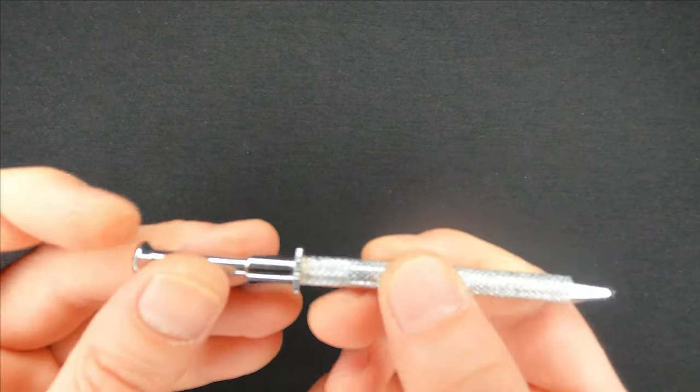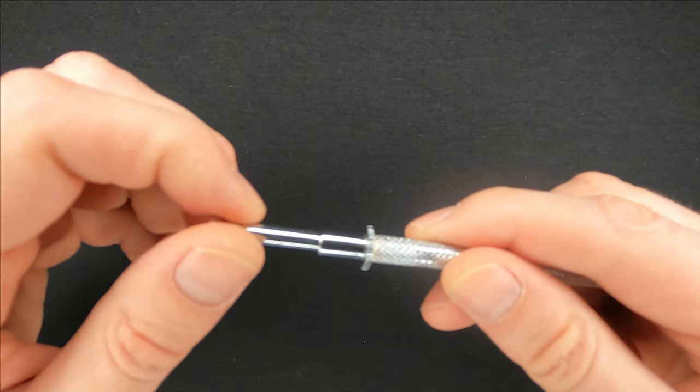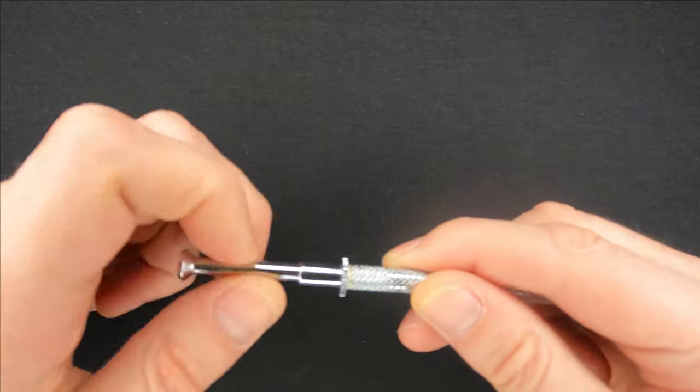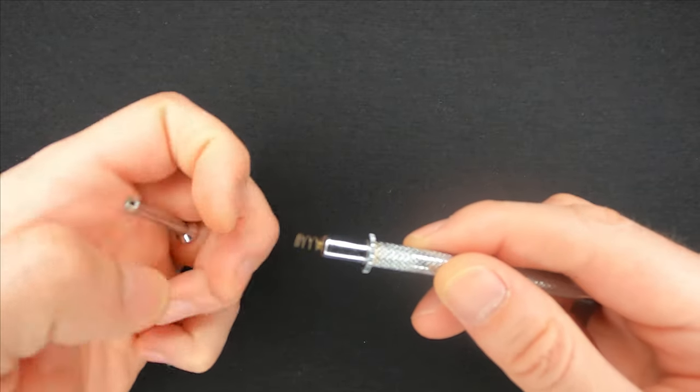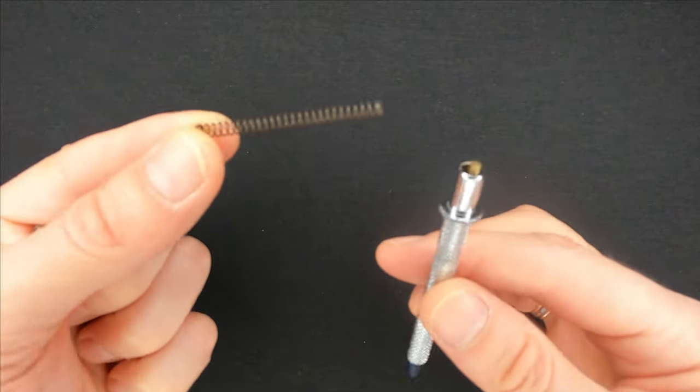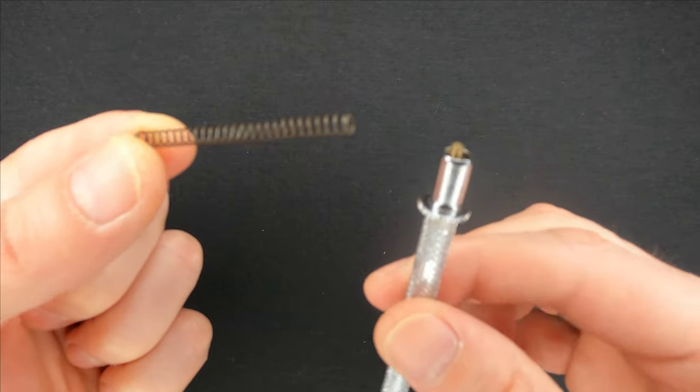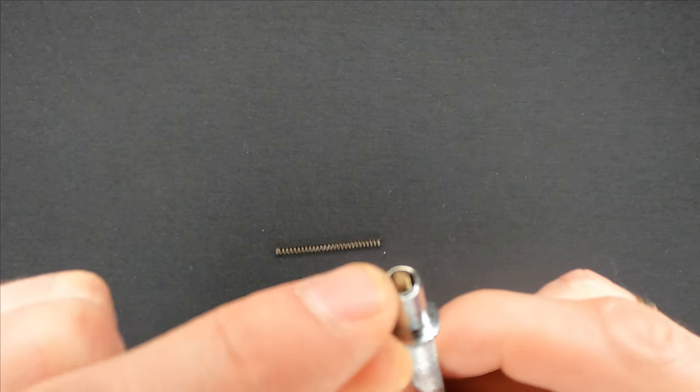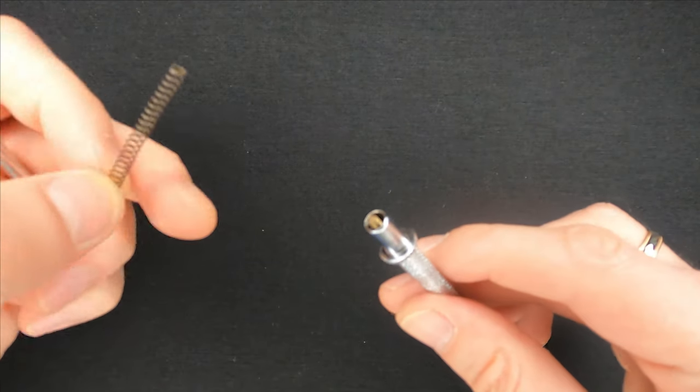Let us have a look inside of the tool and to do that we just simply unscrew the handle. As you can see we've got a spring inside and the part in the middle has a thread which allows you to screw the handle to the front piece.